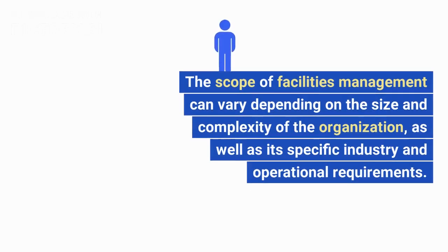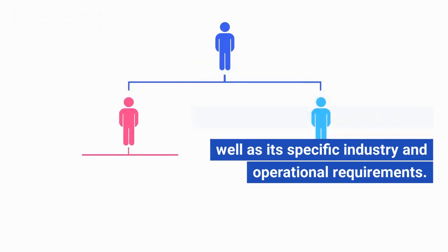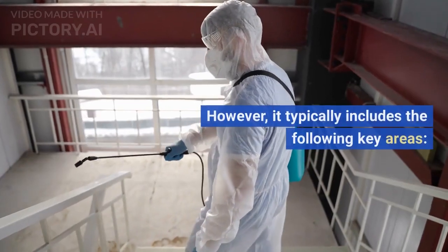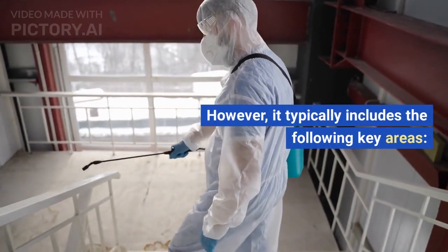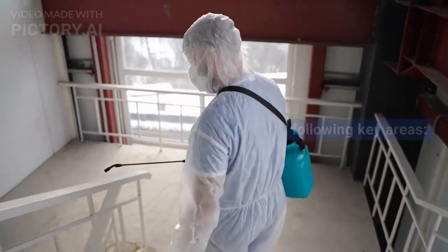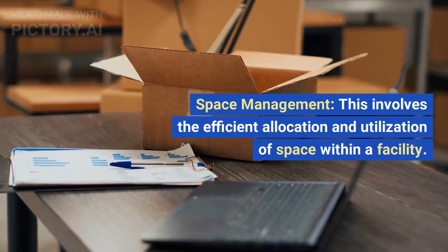The scope of facilities management can vary depending on the size and complexity of the organization, as well as its specific industry and operational requirements. However, it typically includes the following key areas. 1. Space management.